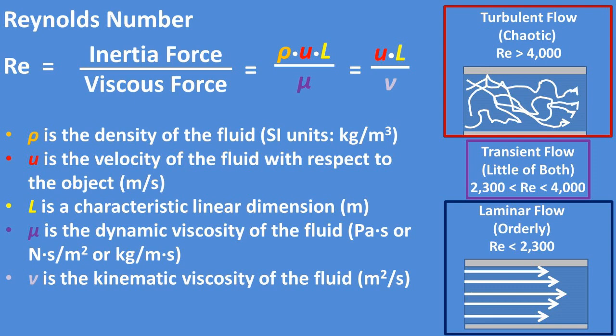We are left with the velocity times the length divided by the kinematic viscosity being equal to the Reynolds number. In case you are wondering, the kinematic viscosity is equal to the dynamic viscosity divided by the fluid density.